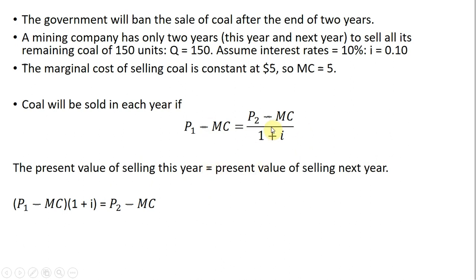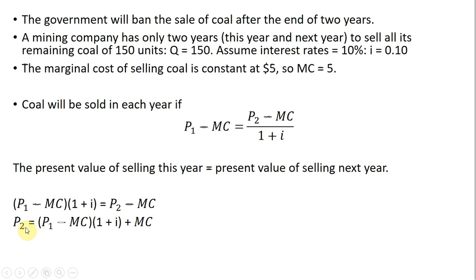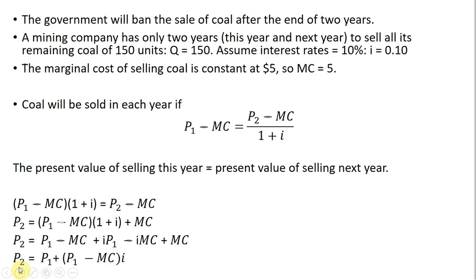Next, I want to take this condition and solve for P subscript 2. Multiplying everything through by 1 plus the interest rate, then adding marginal cost to the other side and rearranging, we notice that the minus MC and plus MC terms cancel. Rearranging, the price of a unit of coal in year 2 equals P subscript 1 times (1 plus I) minus MC times I.